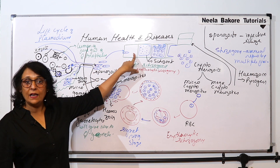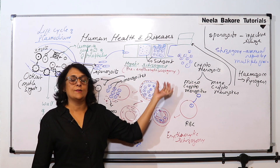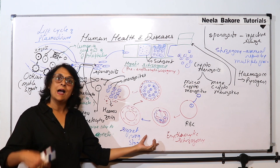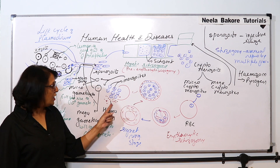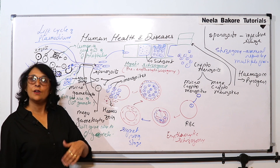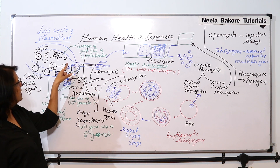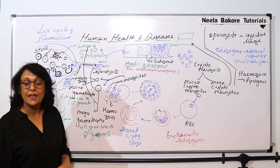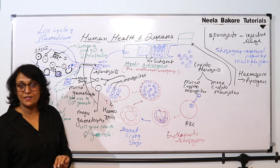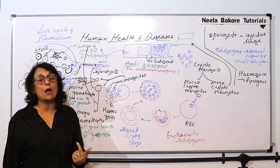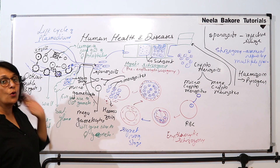The sporozoites will enter into the liver cells — hepatic schizogony. Cryptomerozoites will be released, smaller and larger. The smaller ones enter into RBC, divide again, and the RBC is ruptured. Whenever the RBC is ruptured, hemozoin is released, and whenever hemozoin is released, the body temperature is going to rise. The merozoites form the gametocytes, gametocytes are taken by the female Anopheles, and in the female Anopheles gamete formation and fertilization takes place. The zygote is now known as ookinete because it is motile, and in the zygote sporogony takes place.